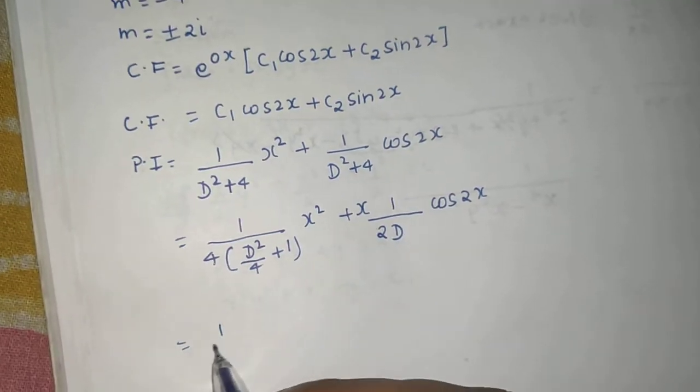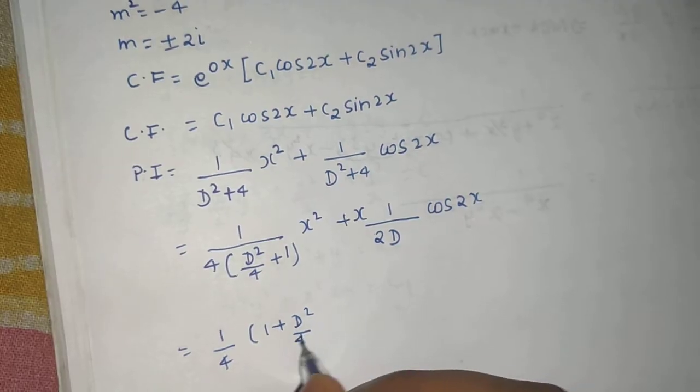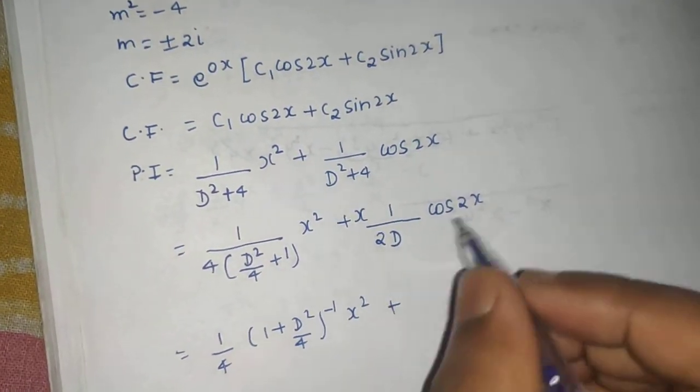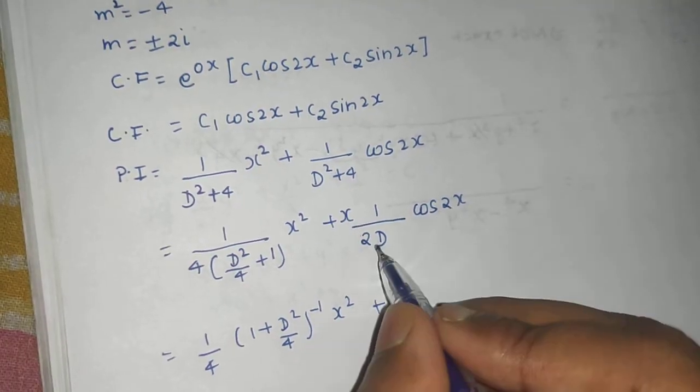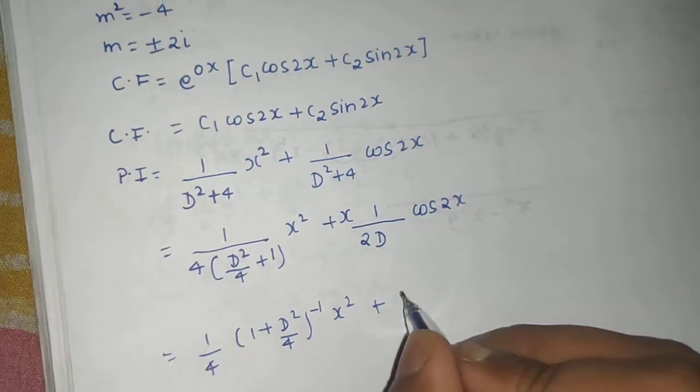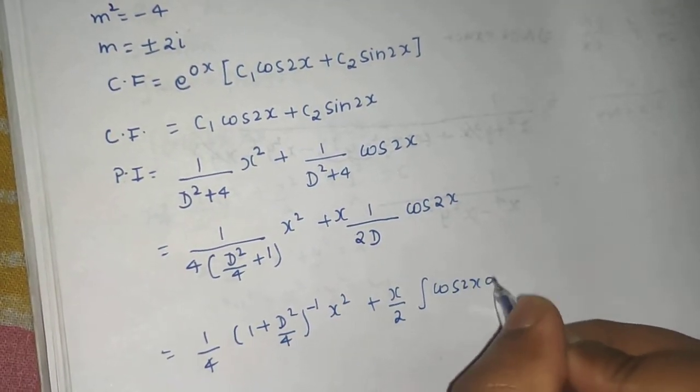So this is 1/4. If I take this to the numerator I will get (1 + D²/4)^(-1) operating on x² plus. Now, no need to put because 1/D is same as the integral. So (x/2) outside integral of cos(2x)dx.